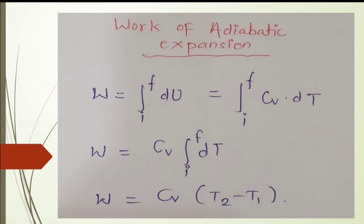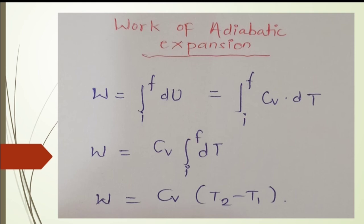The work of adiabatic expansion is calculated using dW = dU. Integrating from Ui to Uf, and substituting dU = CV·dT (from the definition of heat capacity at constant volume), we take CV outside the integration and put limits from Ti to Tf. This gives W = CV·(T2 − T1). This is the work of adiabatic expansion. We have now seen all types of work.